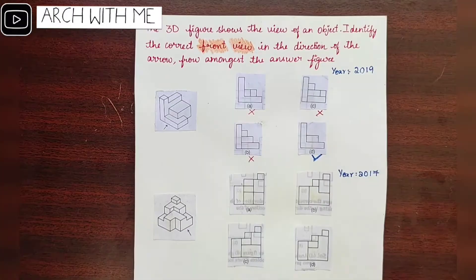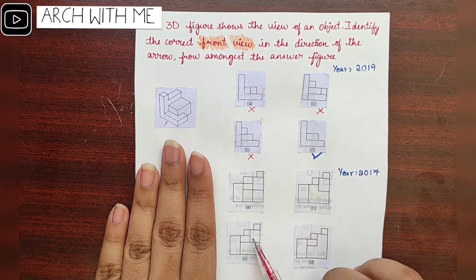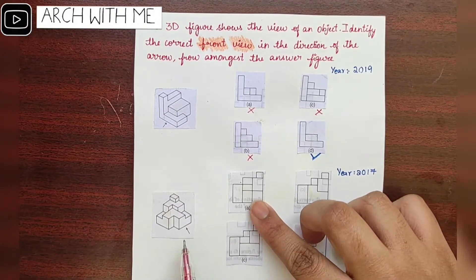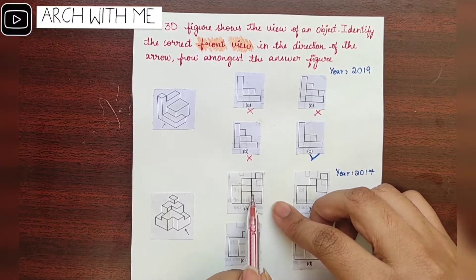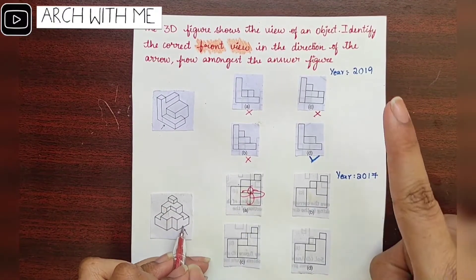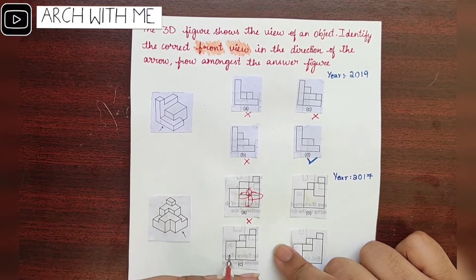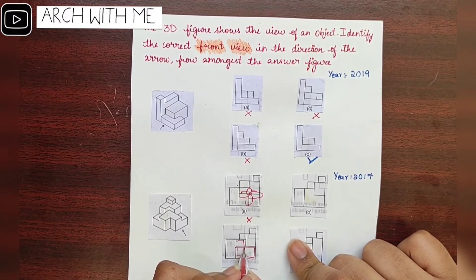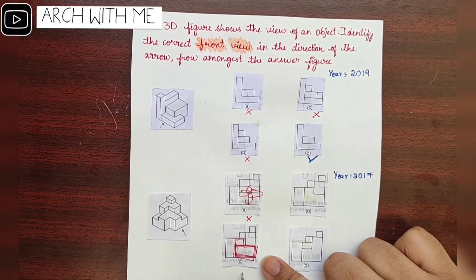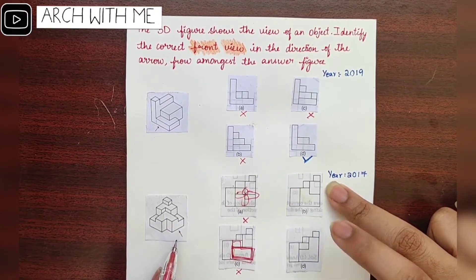Next question — use the same approach: close the question and start observing the options, searching for the option that looks different from others. Here one option looks different, so compare to the question — we are having so many lines here, so that will be the wrong option. Next, among the remaining three options, C is looking different. Here we are having a rectangle, but in option C there is another shape — no rectangle — so option C is wrong.